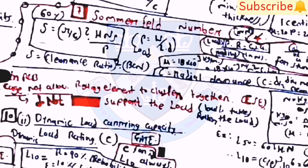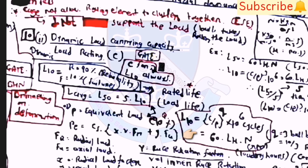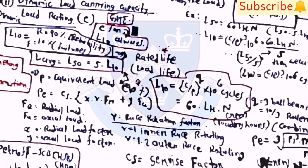The most important equation from the machine design bearing portion is the Sommerfeld number: S = (R/c)²·(mu·N_s/p) = (R/c)²·BCN. For dynamic load carrying capacity (dynamic load rating): L_10 = (C/P)^q × 10^6 cycles, where q = 3 for ball bearing and q = 10/3 for roller bearing.